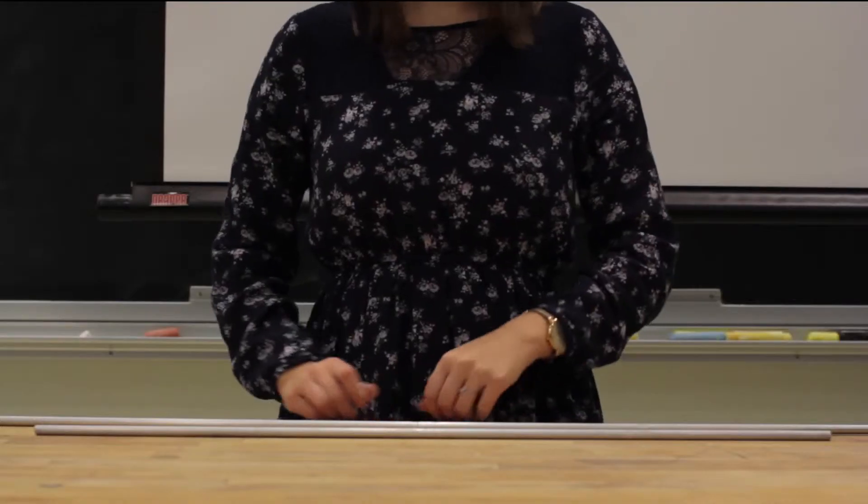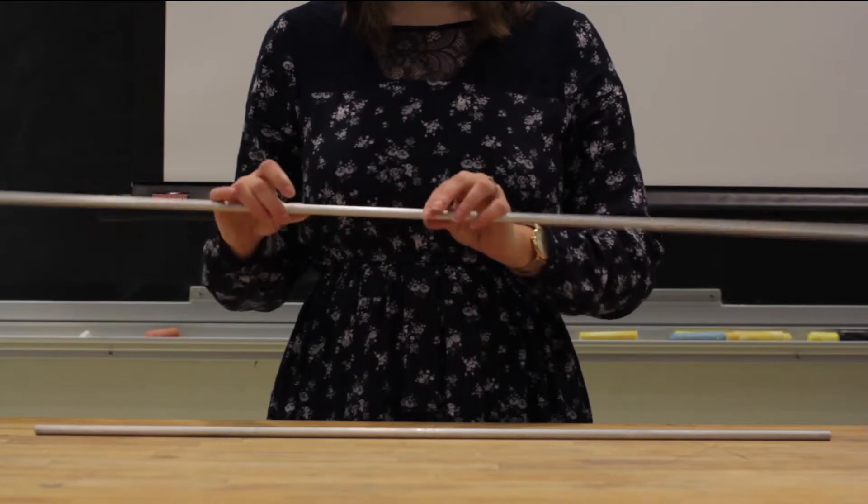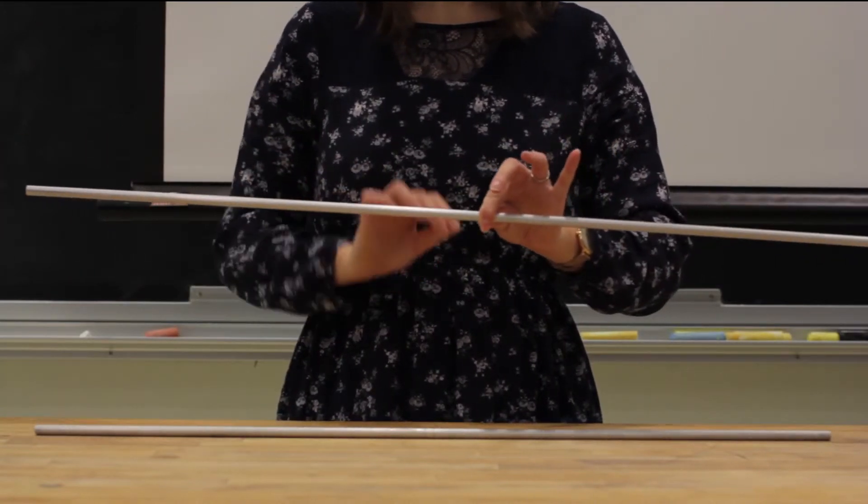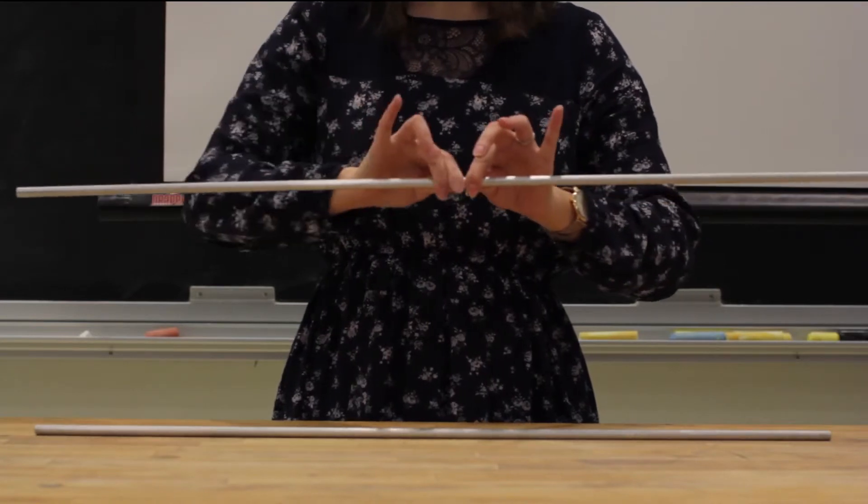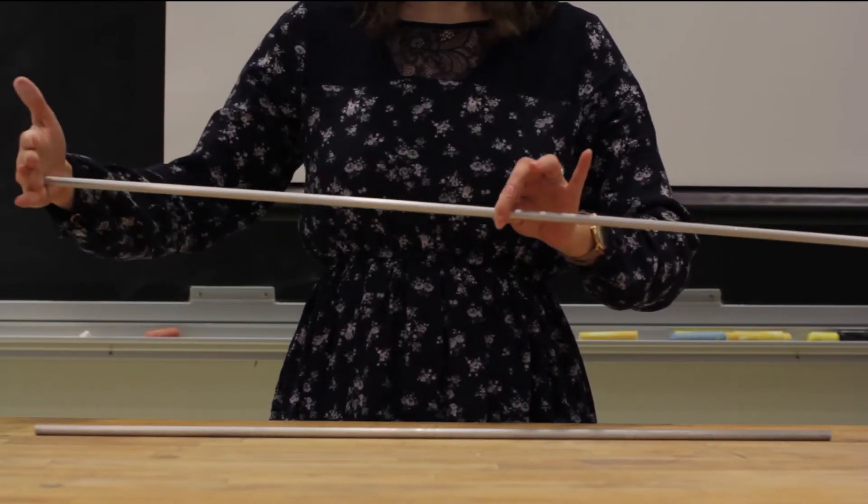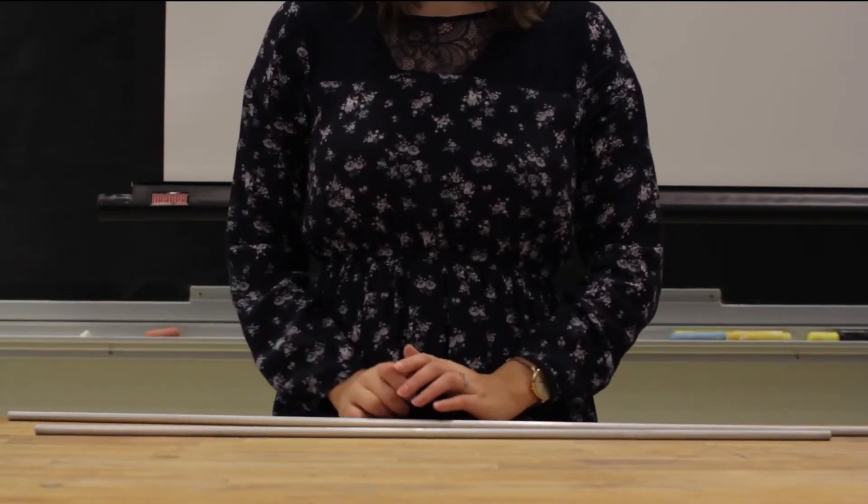Note that if we set up vibrations in a slightly longer rod, we get a lower pitch. The wavelength, twice the length of the rod, is larger. The velocity of sound in aluminum is the same, and thus the frequency is smaller. We perceive a smaller frequency as a lower pitch.